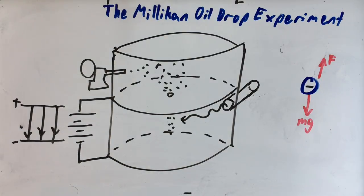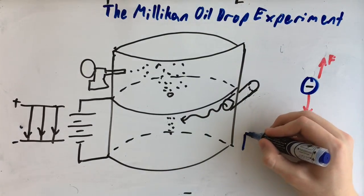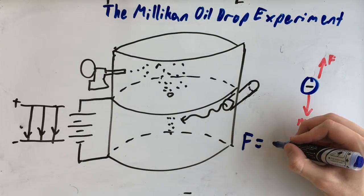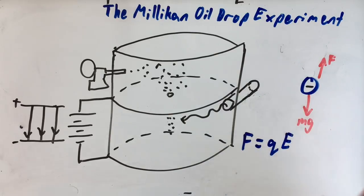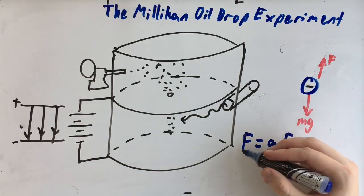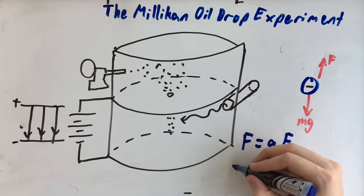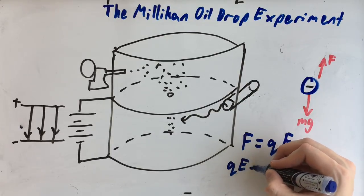Here, you know that the force is equal to QE, Q being the charge of the particle and E being the electric field strength. By rearranging the equation, because you know that the force is equal to the weight, you know that QE is equal to MG.